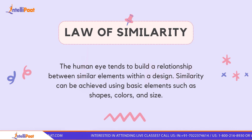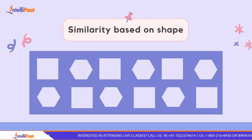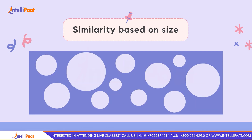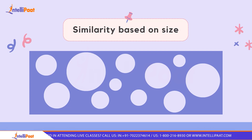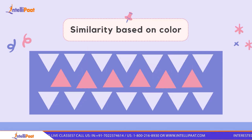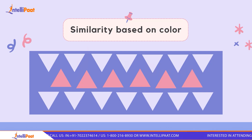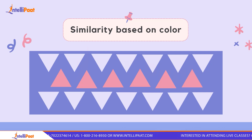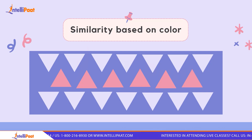Let's look at these three traits. First, we have the law of similarity based on shape. Then we have the law of similarity based on size — as you can see, we have bigger circles and smaller circles. Next, we have the law of similarity based on color, so as you can see, we have two different colors here. The brain then spends time and effort trying to make a connection between items that are highly similar to one another to understand the relationship.